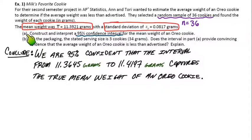So that's it for part A. We did the four steps. We did state, plan, do, conclude. And now part B is where it actually gets interesting. We can make some inferences and answer some questions about the company's claims. So for part B here, it says, on the packaging, the stated serving size is three cookies, which have a weight in total of 34 grams. Does the interval in part A provide convincing evidence that the average weight of an Oreo cookie is less than advertised? And explain that. Well, first of all, our interval only talks about a single Oreo cookie. And the packaging talks about three cookies.